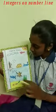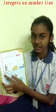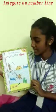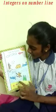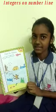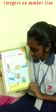This surface is known as 0, and the above part is known as positive integers, and the below part is known as negative integers.